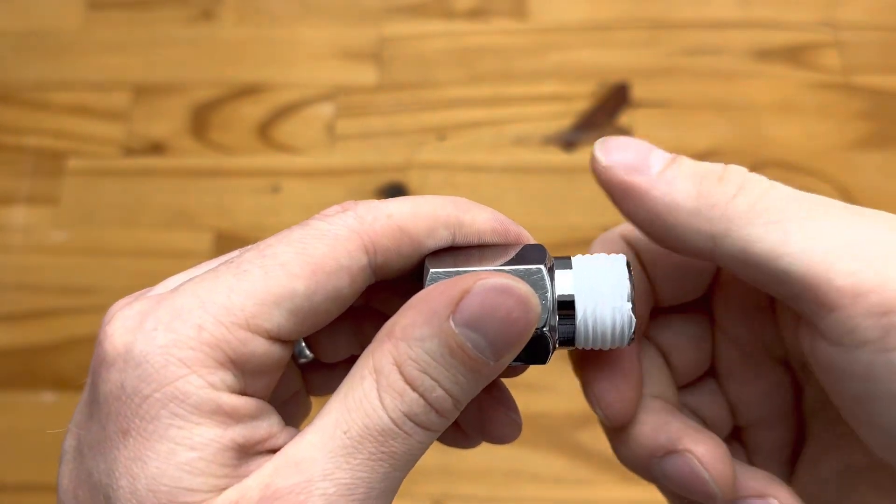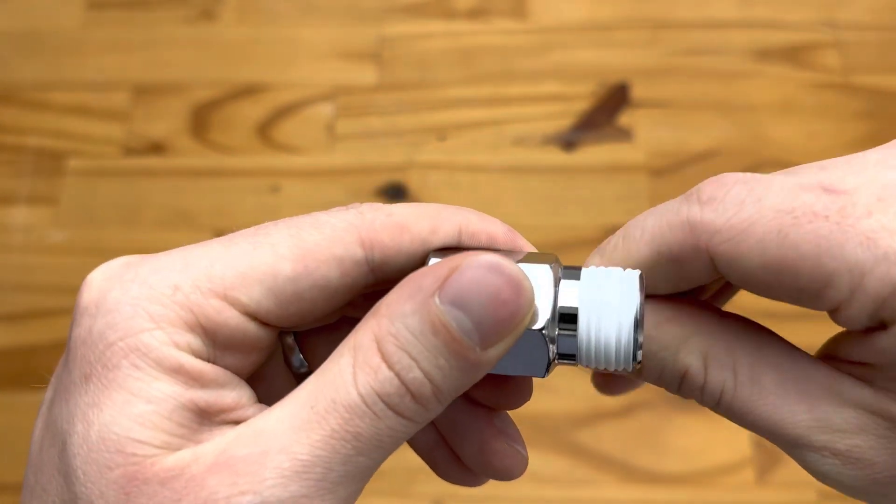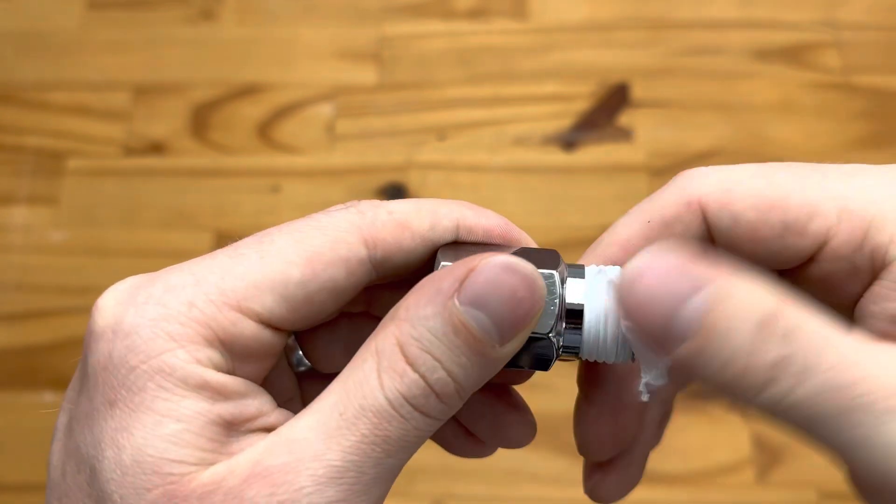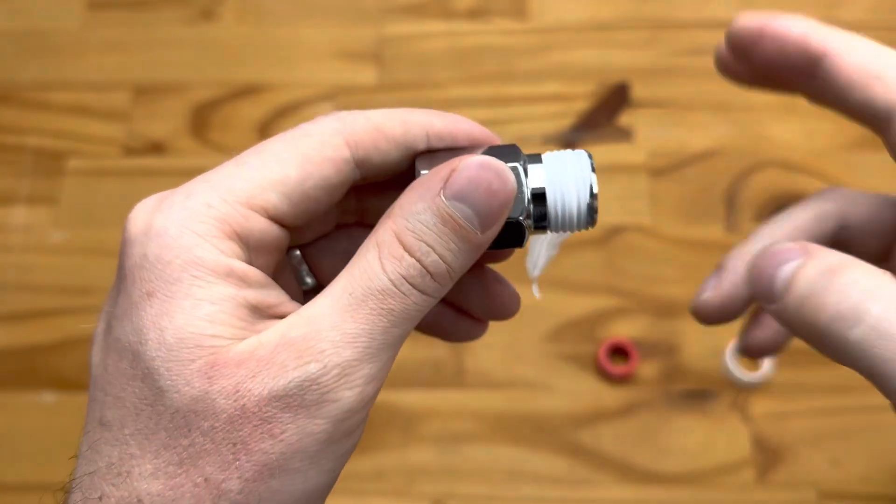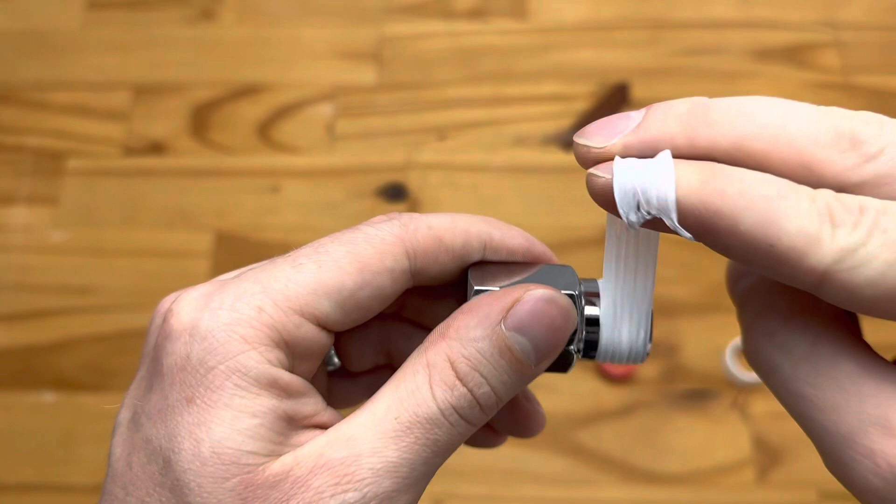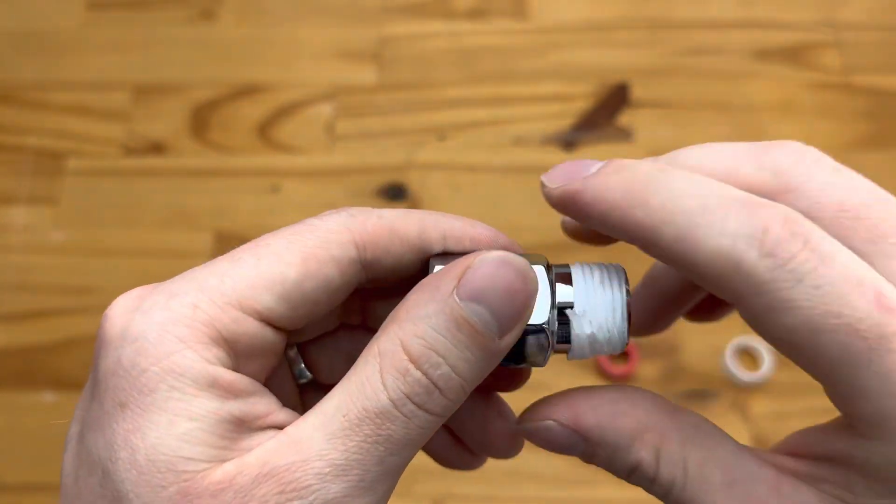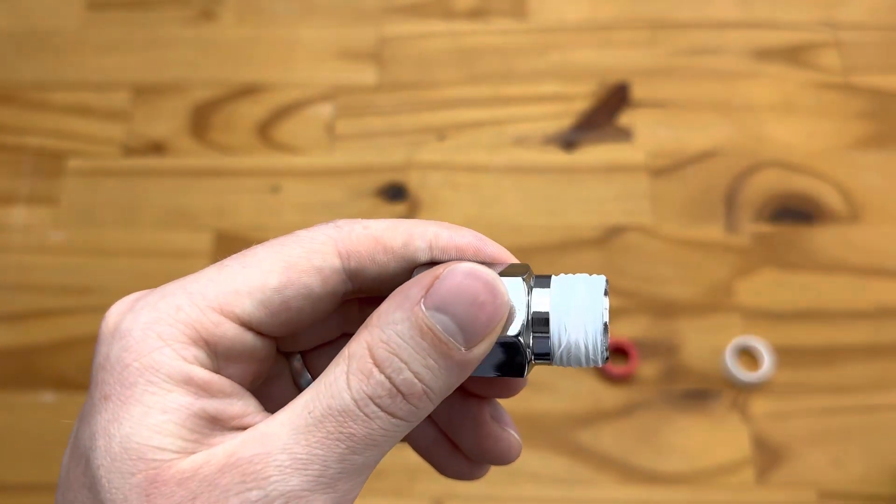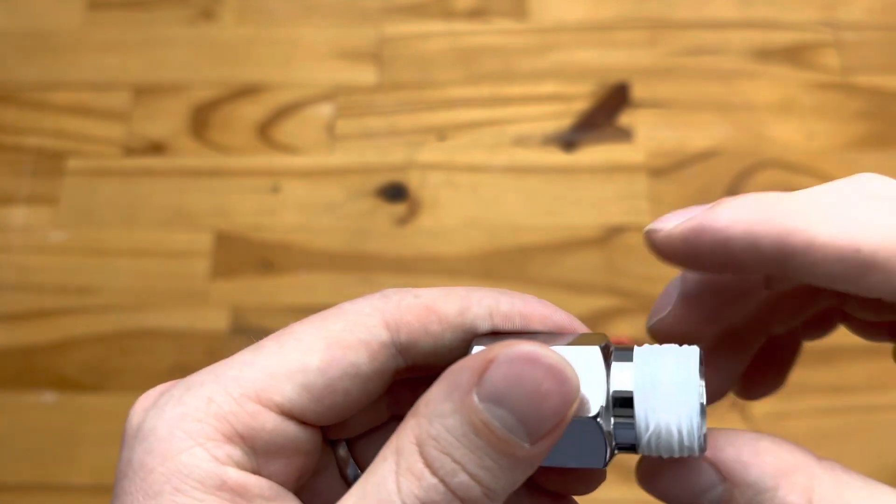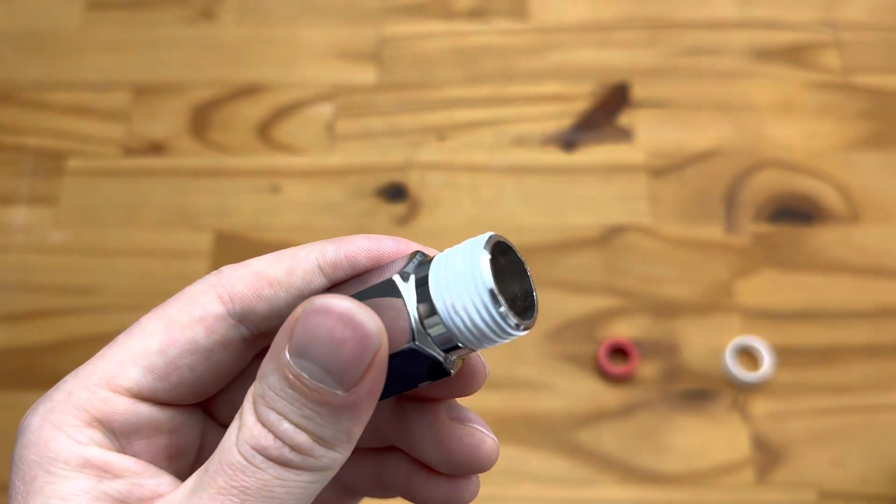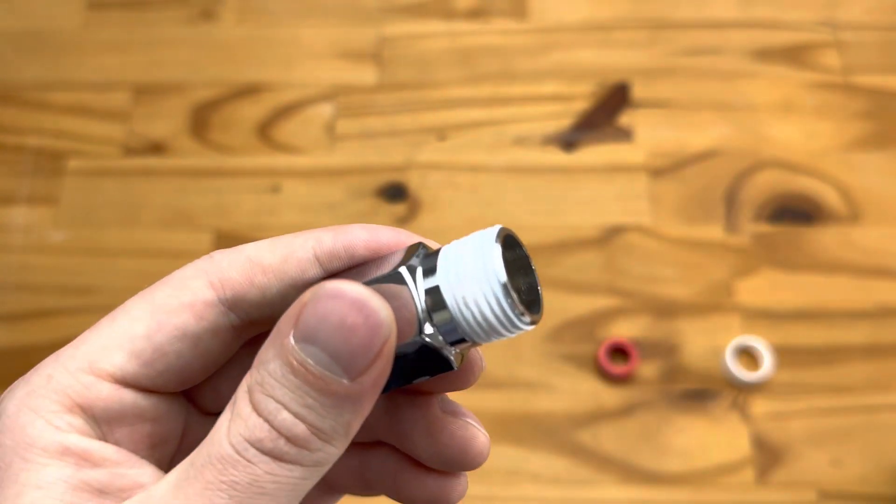If we were to install it in the opposite direction, as you tighten your fitting it will start to unroll and you'll lose the effectiveness of your thread tape. By installing it in the correct direction and at the correct thickness, you can ensure a secure connection that will not leak.